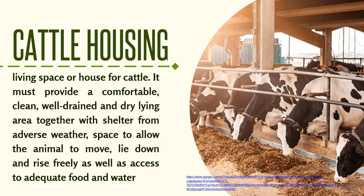Next, the livestock materials and equipment. First, we have cattle housing — the living space or house for cattle. It must provide a comfortable, clean, well-drained, and dry lying area together with shelter from adverse weather, space to allow the animal to move, lie down and rise freely, as well as access to adequate food and water.